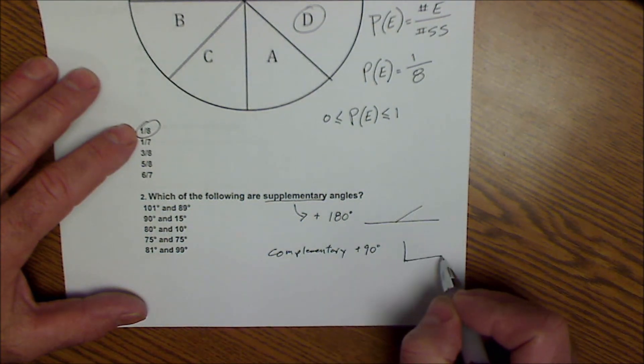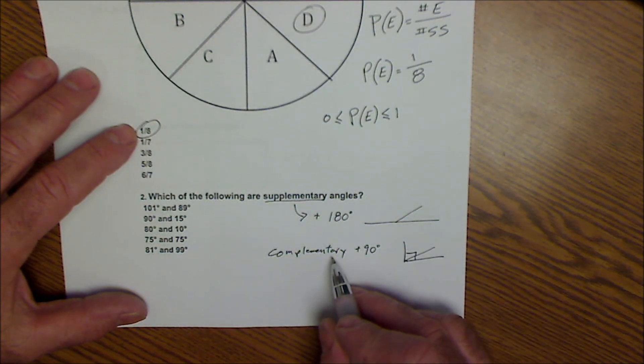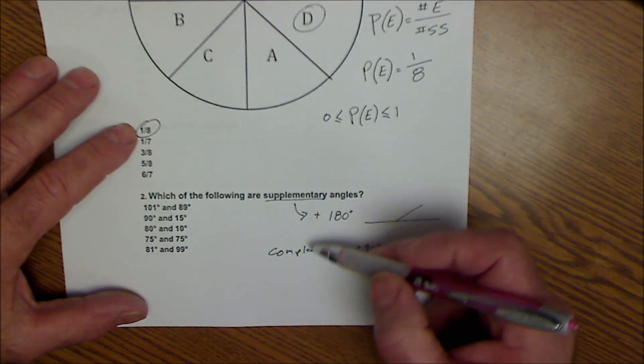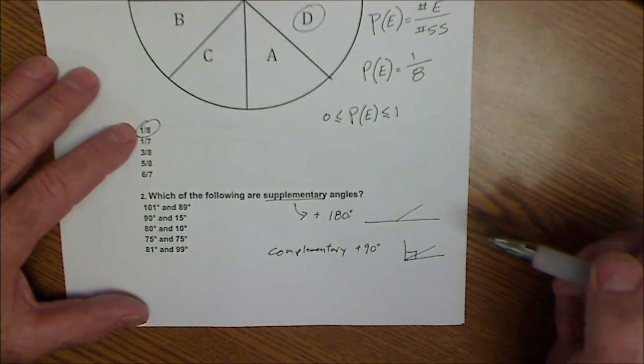So if you had a right angle, two angles that add up to 90 are complementary. And the way I remember that is C comes before S in the alphabet, just like 90 comes before 180 in order.